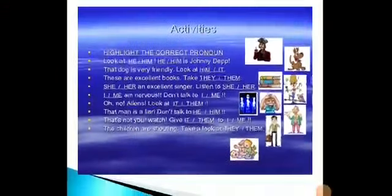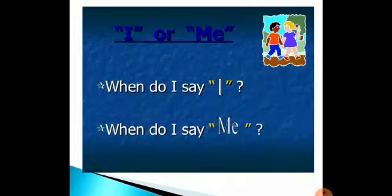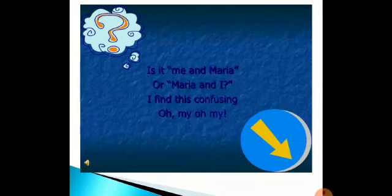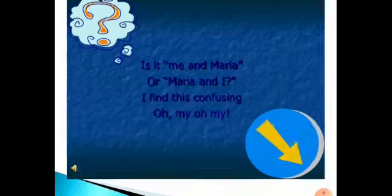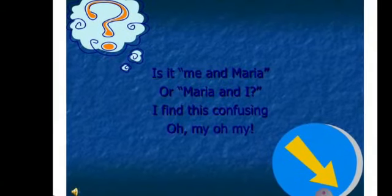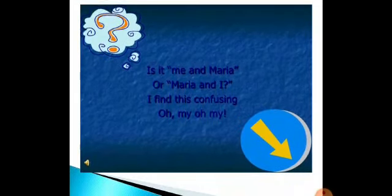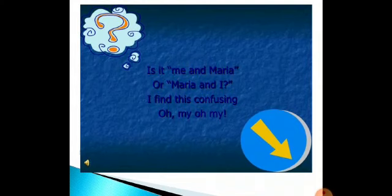Now, with the second slide: the difference between I and me. When do I say 'I' and when do I say 'me'? Is it 'me and Maria' or 'Maria and I'? I found this confusing. Is it 'me' or 'I'? This is a confusing thing that will pop up in your mind every time you are writing a sentence.